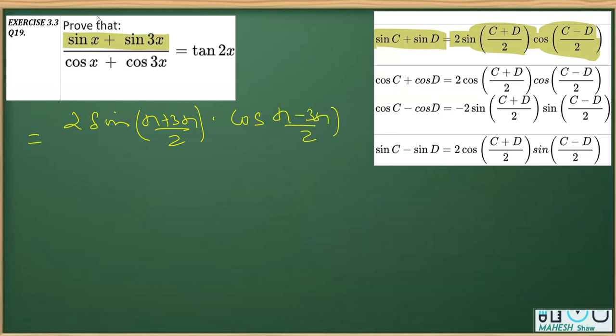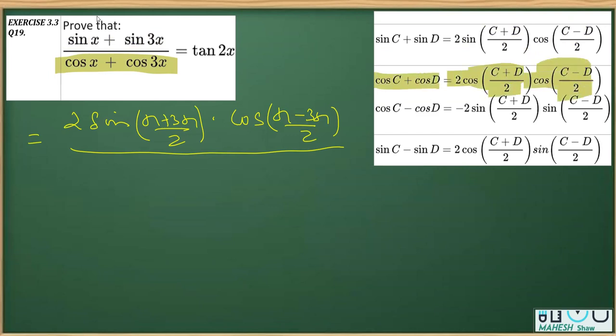That divided by the denominator. We can see that in denominator again we'll be applying C and D, but this time this is cos C plus D. So cos C plus D is 2 cos C plus D by 2, cos C minus D by 2. So it is 2 cos x plus 3x by 2 into cos x minus 3x by 2.